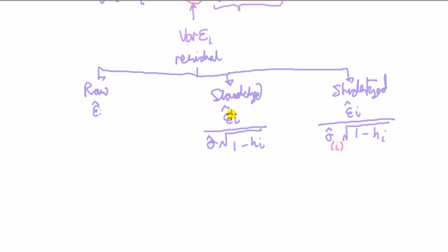The standardized one, which is like the z-score, so we take the residual divided by the square root of that variance, so it's going to be sigma hat times the square root of 1 minus the leverage point I.